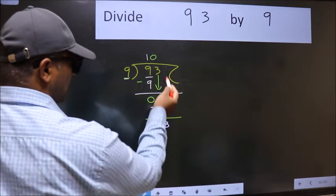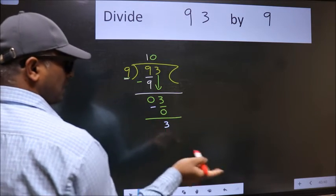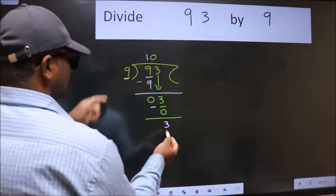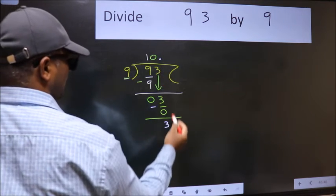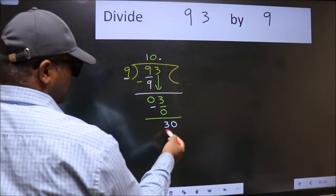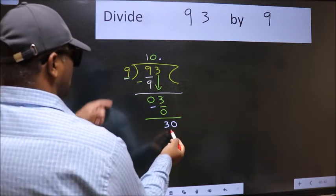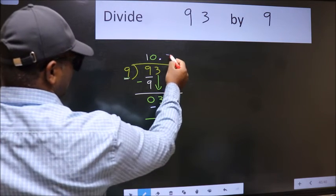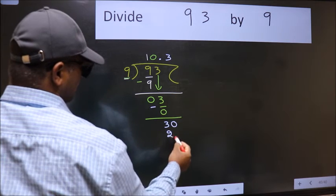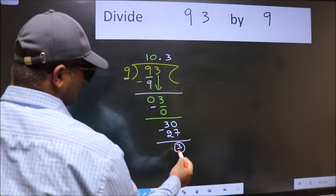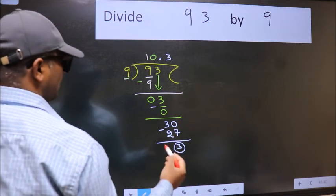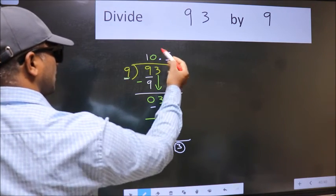Over here, we did not bring any number down. And 3 is smaller than 9. So now we can put dot and take 0. So 30. A number close to 30 in 9 table is, 9 times 3 is 27. Now we subtract. We got 3 again. That means we get bar on this number.